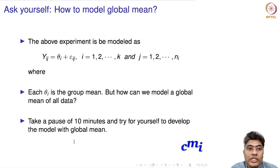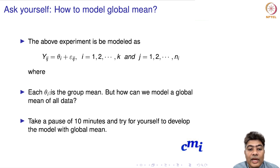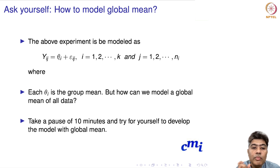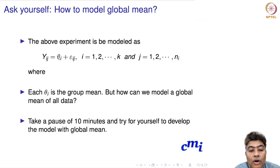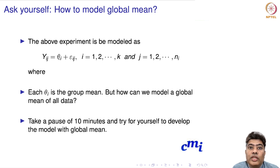Now I pose a question: how do we model a global mean in the above experiment? The model y_ij = θ_i + ε_ij gives us group means θ_i, but how can we incorporate a global mean for all the data? I would like you to pause the video for about 10 minutes, think about it, and try to develop the model with a global mean.